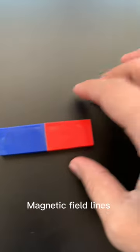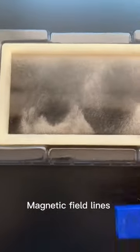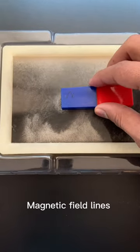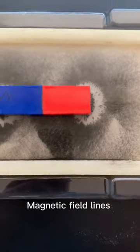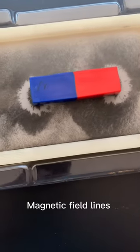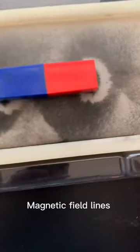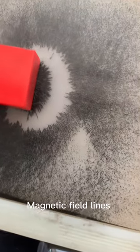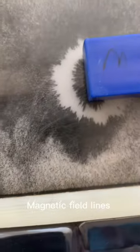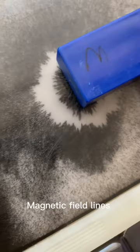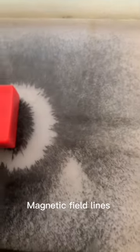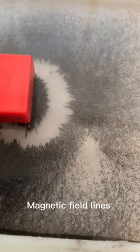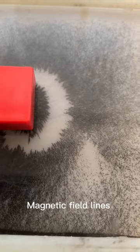And there you see what essentially happens as it relates to the magnetic field around a typical bar magnet. As you can see at the poles, there is more of a concentration of the magnetic field lines, and that is simply because that is where you would experience the strongest force of attraction.